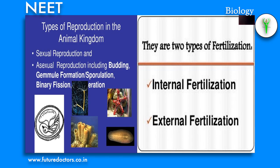Reproduction: there are two types of fertilization — internal and external. Reproduction is of two types: sexual and asexual. Asexual reproduction does not involve the fusion of gametes and is found in lower animals like sponges. Sexual reproduction involves the formation and fusion of gametes. The male gametes called sperms are motile, while the female gametes called ova are generally non-motile.